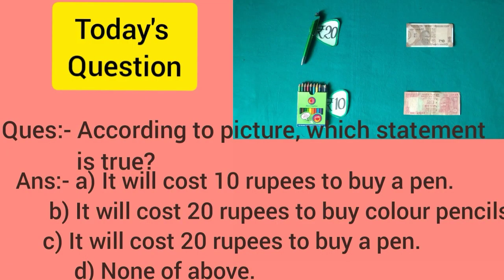Today's question: according to the picture, which statement is true? In the picture, the price of a pen is 20 rupees and the price of color pencils is 10 rupees. There are 4 answers. A: It will cost 10 rupees to buy a pen. B: It will cost 20 rupees to buy color pencils. C: It will cost 20 rupees to buy a pen. D: None of the above. The right answer is C — it will cost 20 rupees to buy a pen.